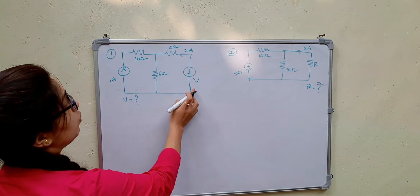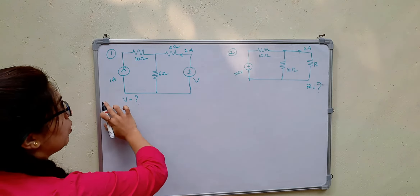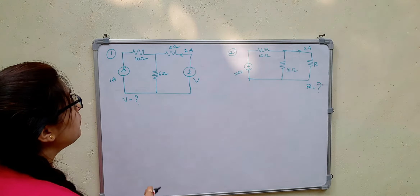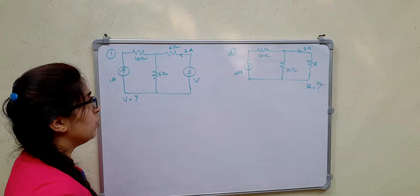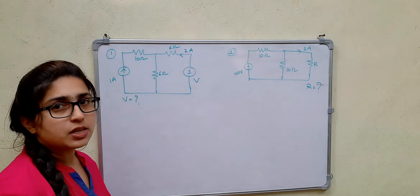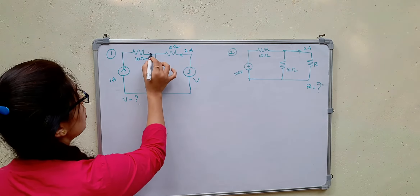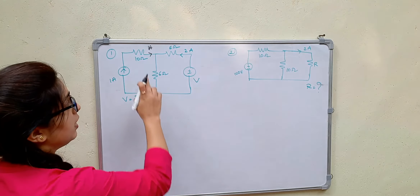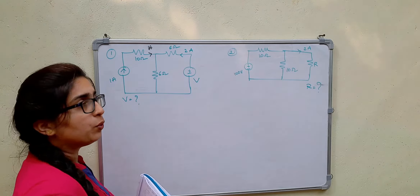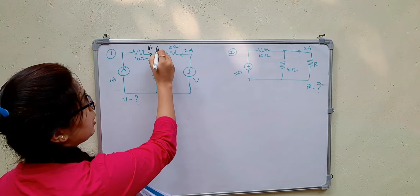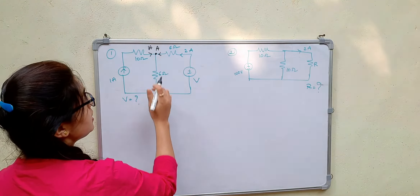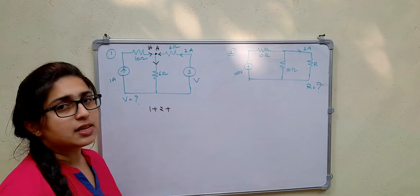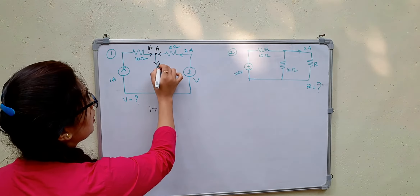The first question is: find the voltage V. We have a current source delivering 1 ampere in series with a 10 ohm resistor. Then we have 6 ohms, 6 ohms, and B ohm. Any resistor in series with a current source can be neglected because it will still deliver 1 ampere. We also have a 2A current here, so at this particular node we apply KCL. So KCL means 1 ampere plus 2 ampere — these are incoming currents. Let us consider Ix as the outgoing current.